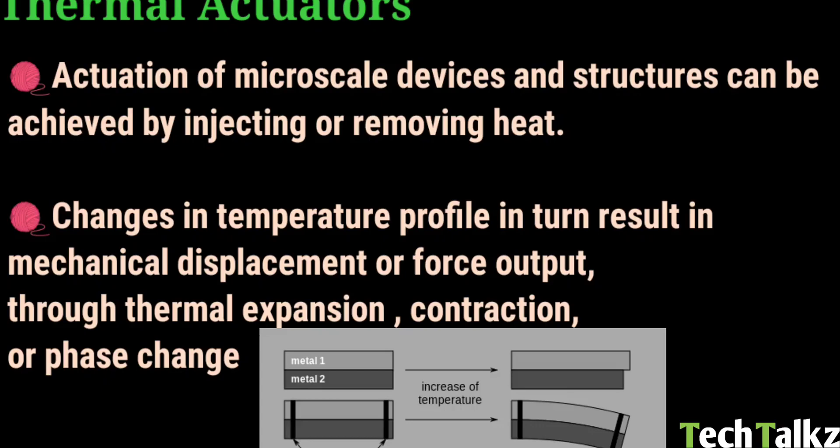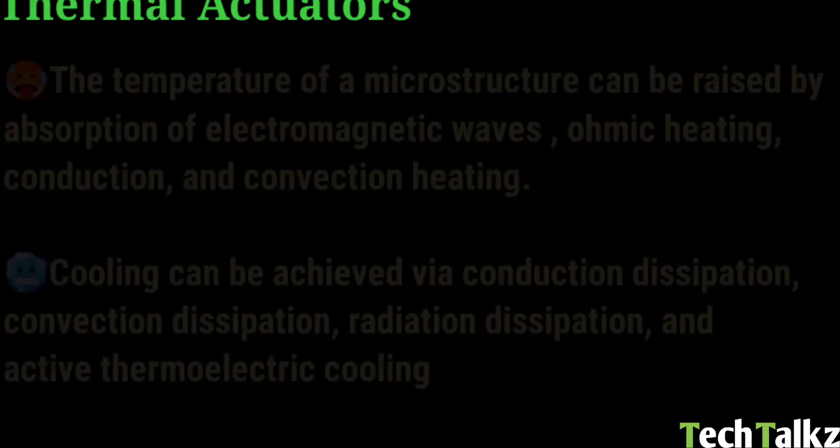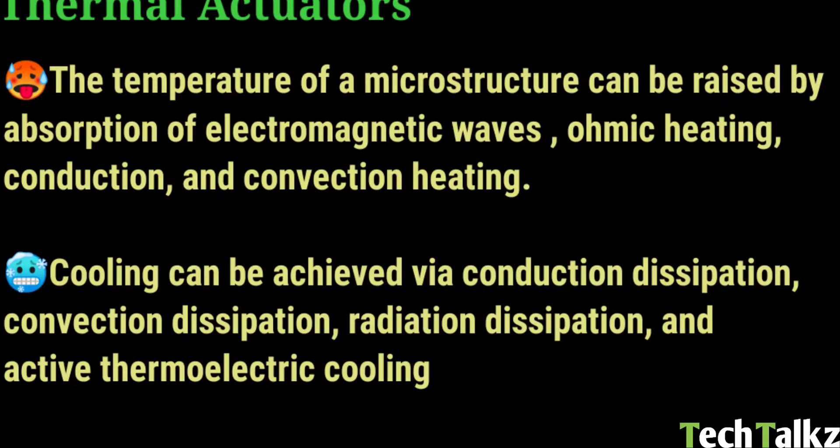Where does this heat apply? Direct or indirect. The temperature of a microstructure can be raised by absorption of electromagnetic waves, through external voltages, that is through ohmic heating, through conduction or through convection process. The cooling can be achieved through conduction dissipation, convection dissipation, radiation dissipation or through active thermoelectric cooling.